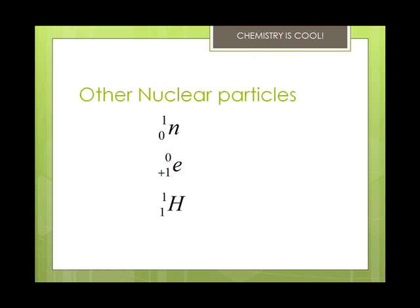Other nuclear particles are written as such. A neutron is written as 1 over 0. A positron is a positive electron, and that's written with a 0 plus 1 E. A proton is usually referred to as hydrogen plus 1, and we write that as 1 over 1 hydrogen. Any other elemental isotope can be a nuclear particle as well, but these are the other three common ones.